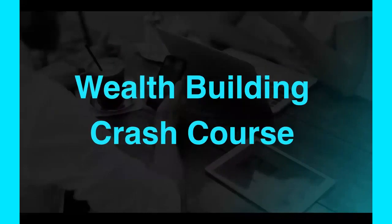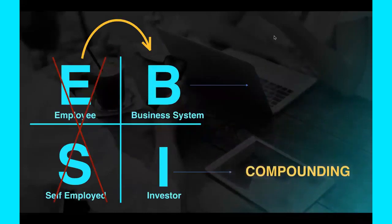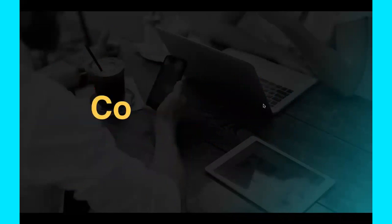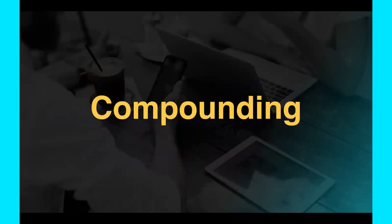Welcome back to our wealth building crash course. We talked about the cash flow quadrant and we're going to be going over the two principles of the right side where you don't have to trade time for money, where wealth is created, where financial freedom and time freedom is created. The two principles are compounding and leverage. In this video, we're going to focus on compounding.